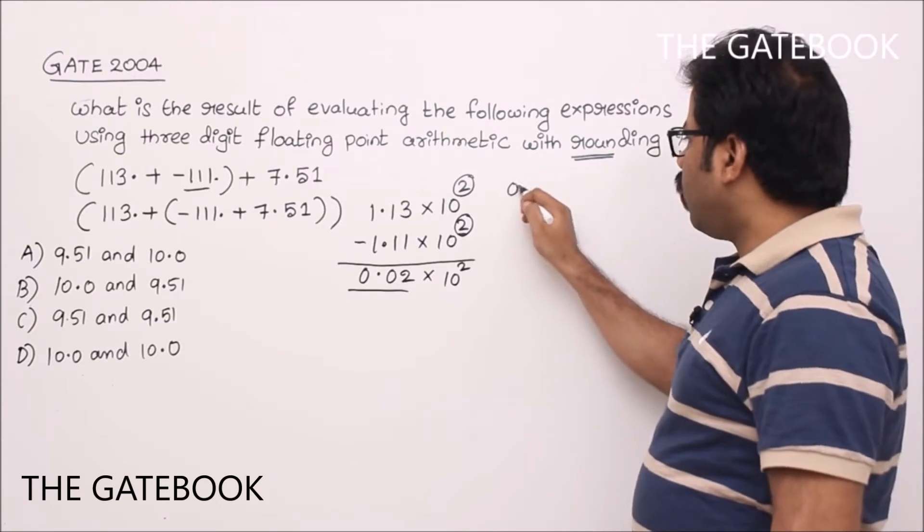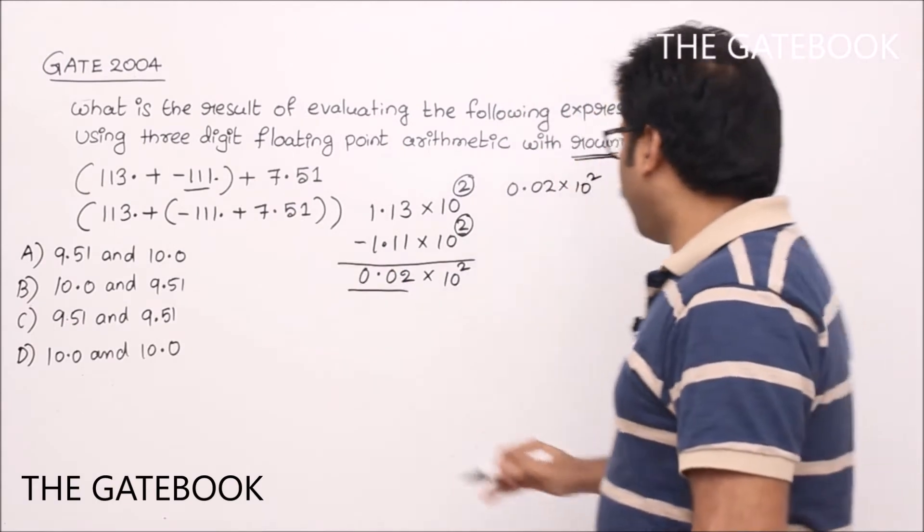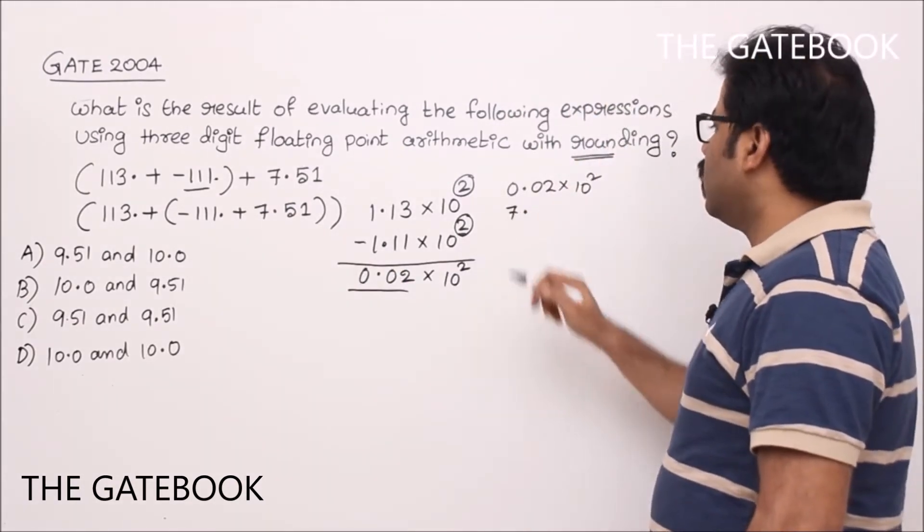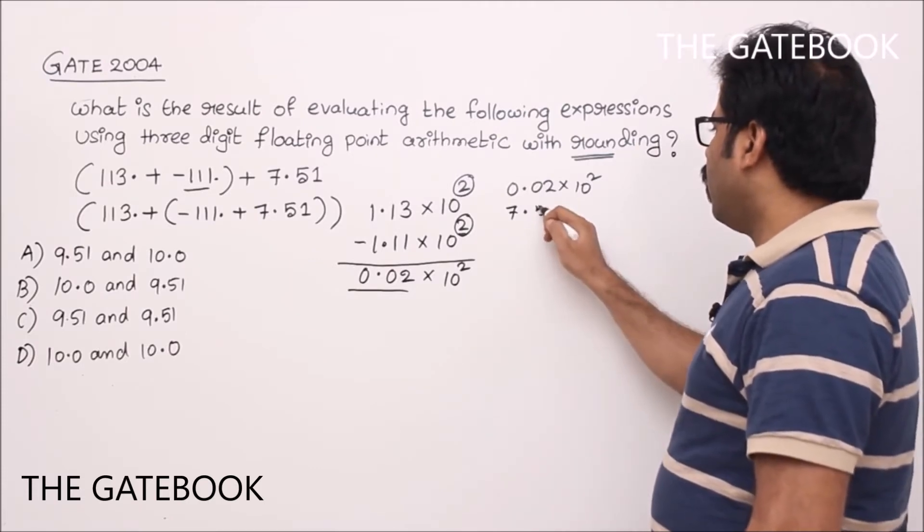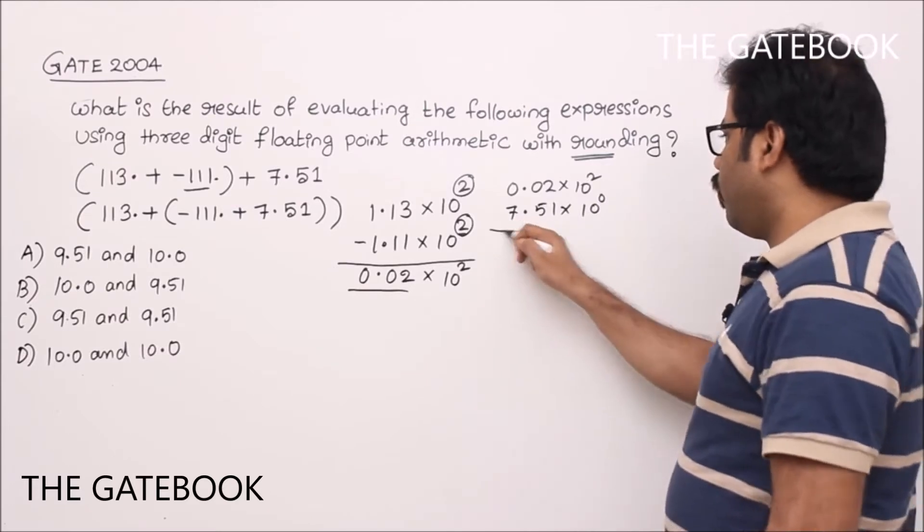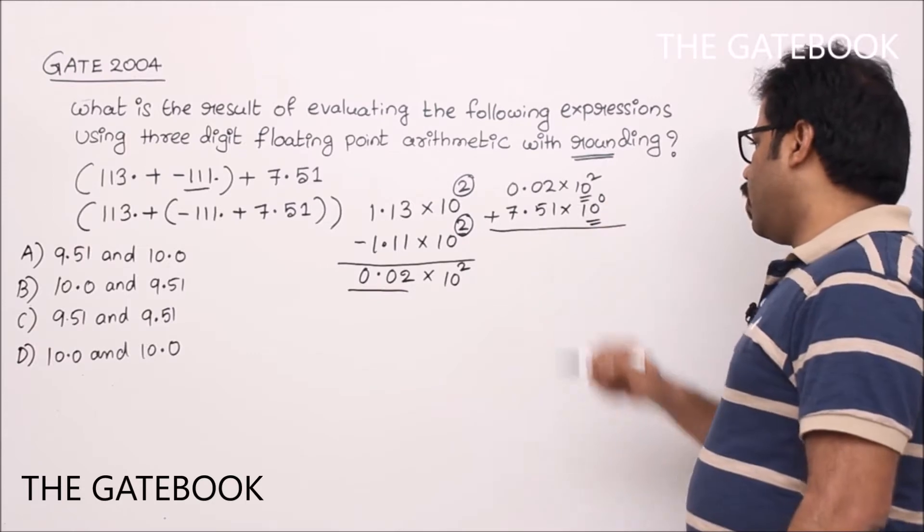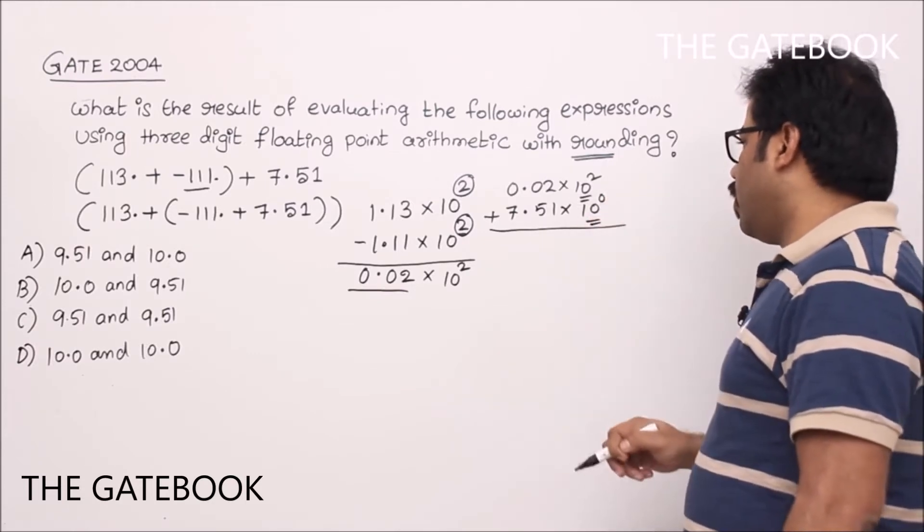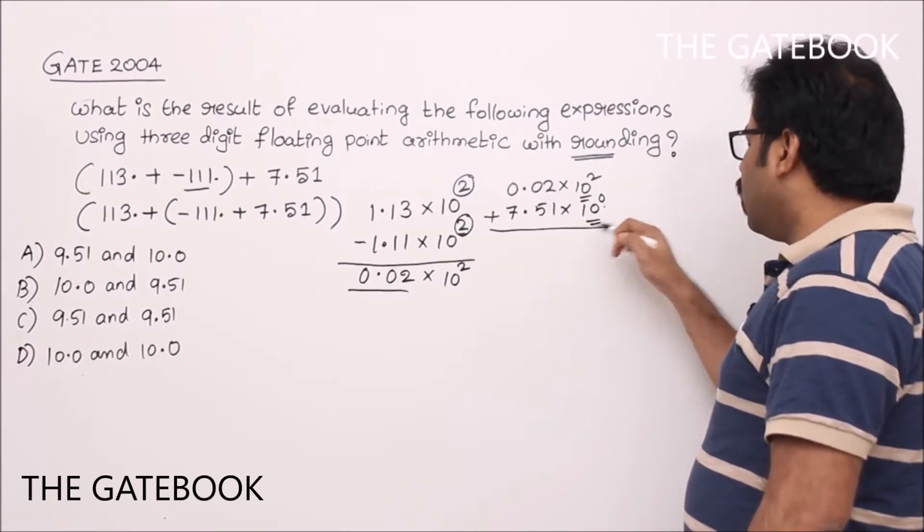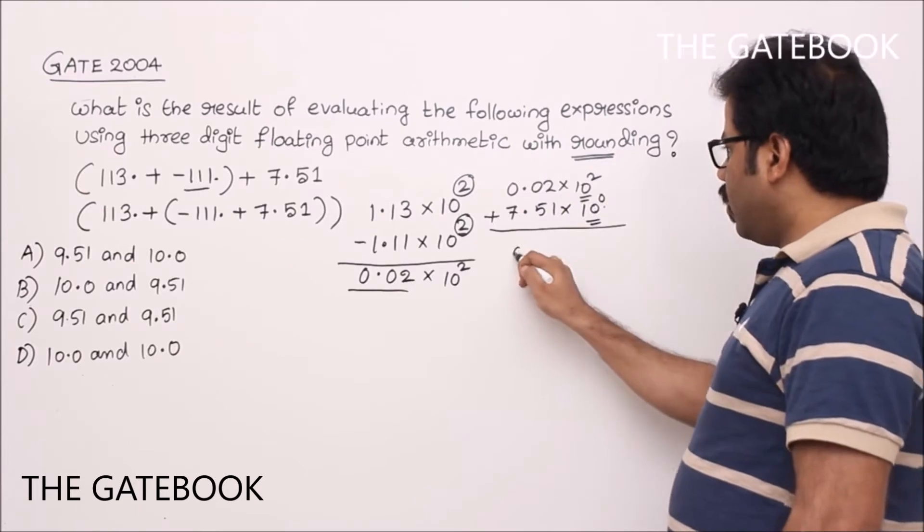So finally I got 0.02 into 10 square. Keep this as it is. Now 7.51, how to write 7.51 in floating point numbers like this? So 7.51 into 10 to the power of 0. Now we need addition. How to do addition of floating point? First of all, base should be equal, that means the exponent should be equal. So when I equate exponents, this 10 power 0 should be made 10 square. For that I have to shift mantissa to right side.